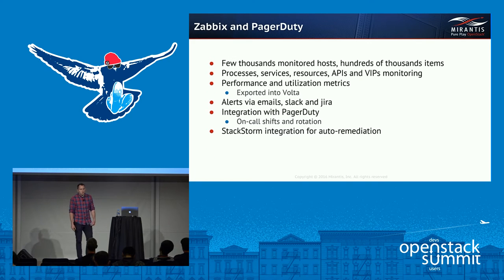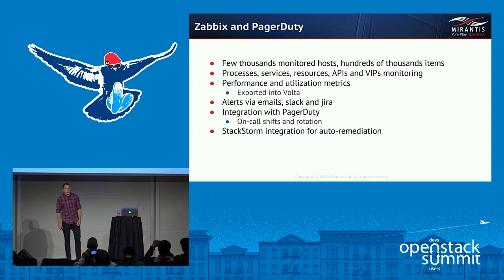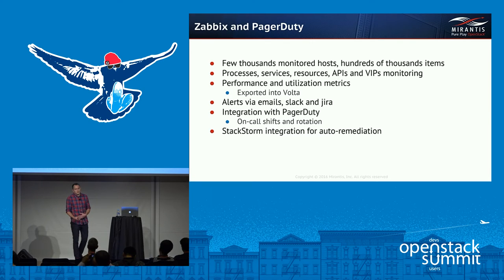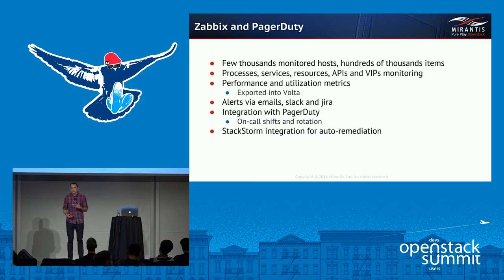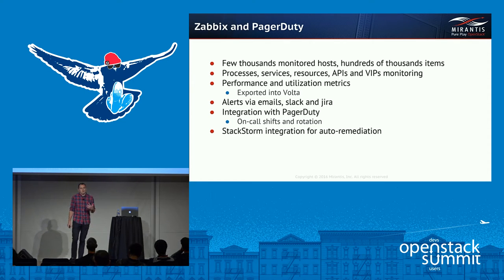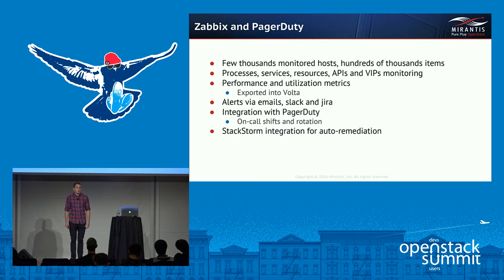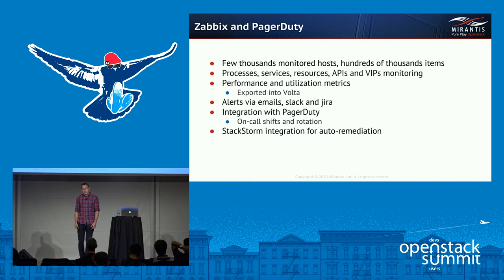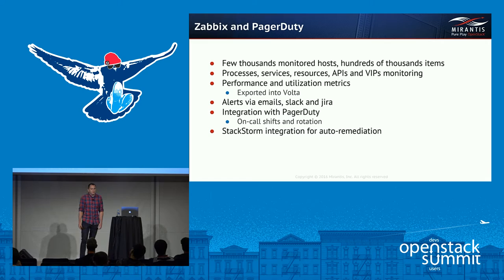Since our main tool is Zabbix, let's discuss it a little bit more. We have a few thousands of monitored hosts, hundreds of thousands of items. We monitor things like processes, services, resources, APIs, and performance and utilization metrics. Alerts go to email, Slack, and Jira. We have integration with PagerDuty for pages and on-call shift rotation. And recently we added StackStorm to run our auto-remediation and self-healing workflows.